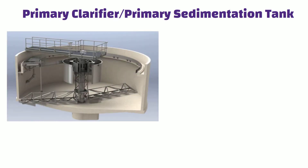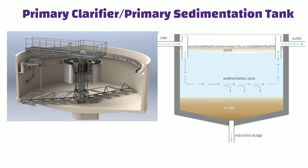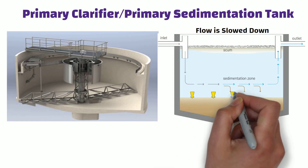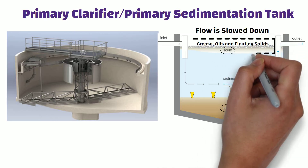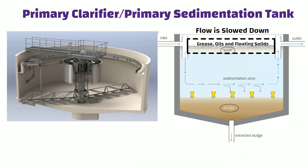Primary Clarifier or Primary Sedimentation Tank: the waste water enters the primary clarifier after passing through screening and grit removal. The flow is slowed down, allowing settleable solids to sink to the bottom of the tank — this solid material is called sludge. Grease, oils and other floating solids rise to the surface, forming a scum layer, which is continuously removed by a skimming mechanism. The sludge accumulated at the bottom is collected using a sludge scraper.